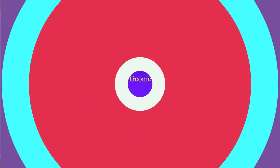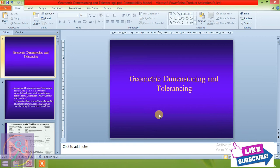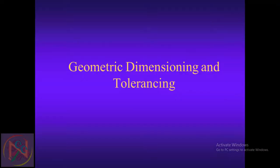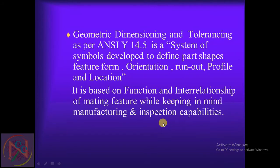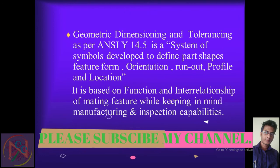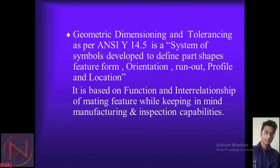Hi guys, I'm Pradeep. Today we have a discussion about Geometric Dimensioning and Tolerancing. I'm making a PPT where all the dimensions and symbols are given. Geometric Dimensioning and Tolerancing, as per ANSI Y14.5, is a system of symbols developed to define part shapes, features, forms, orientations, runout, profile, and locations.